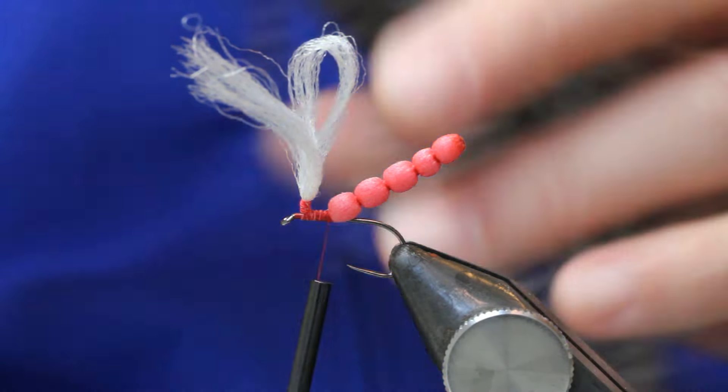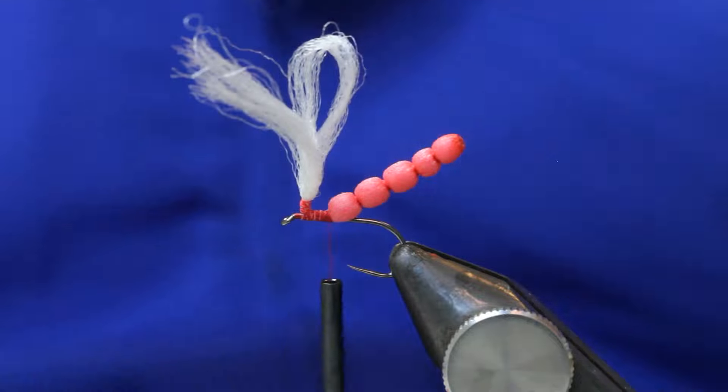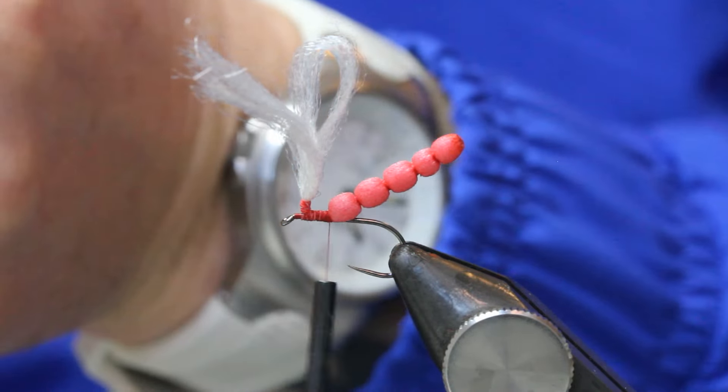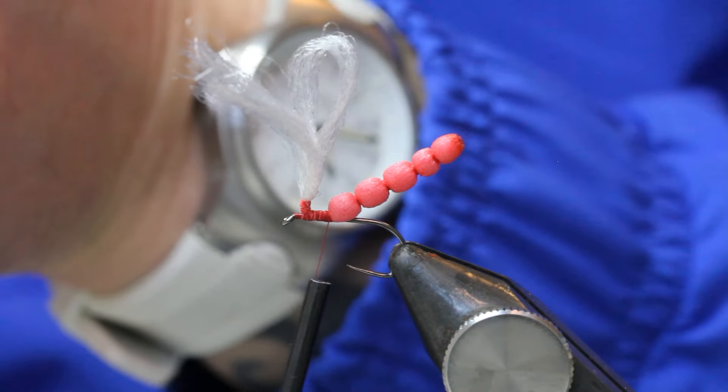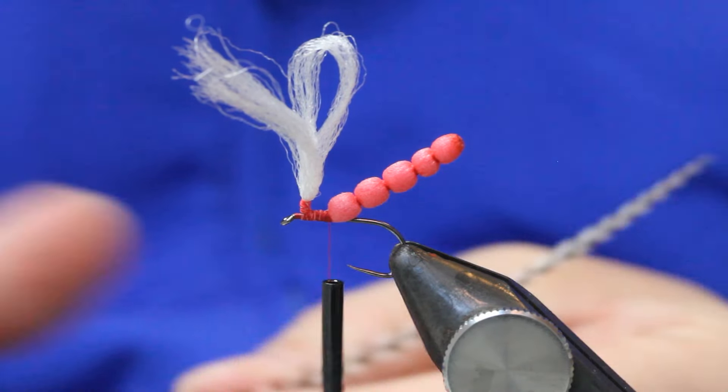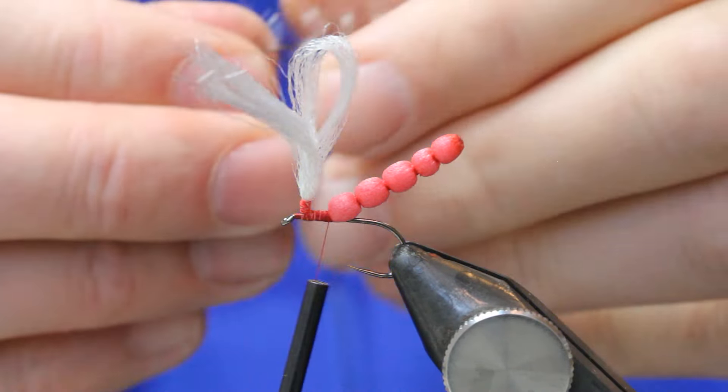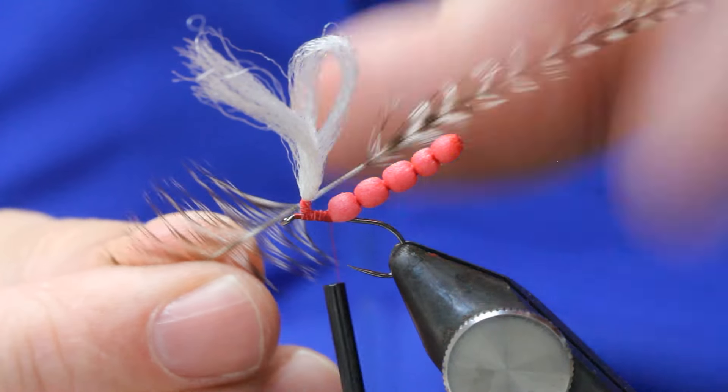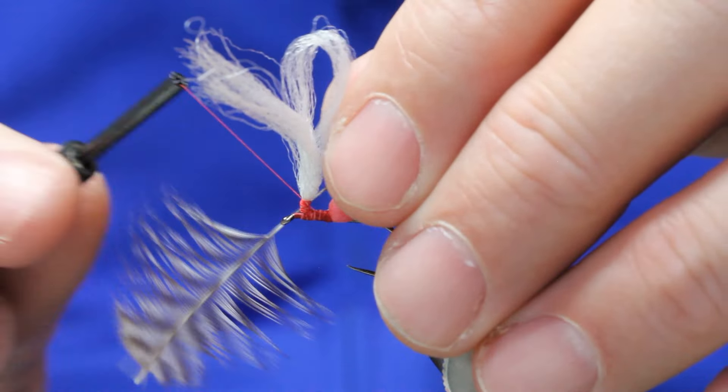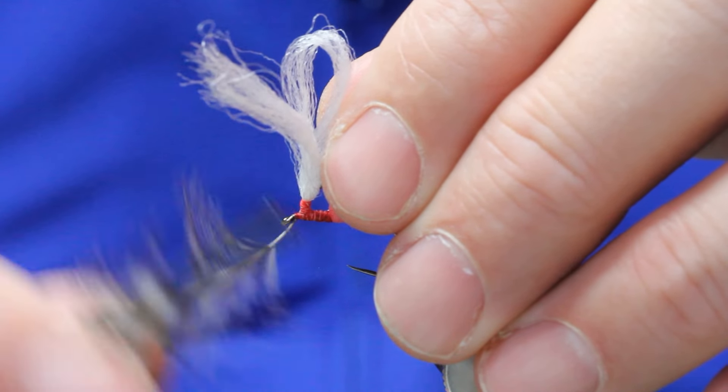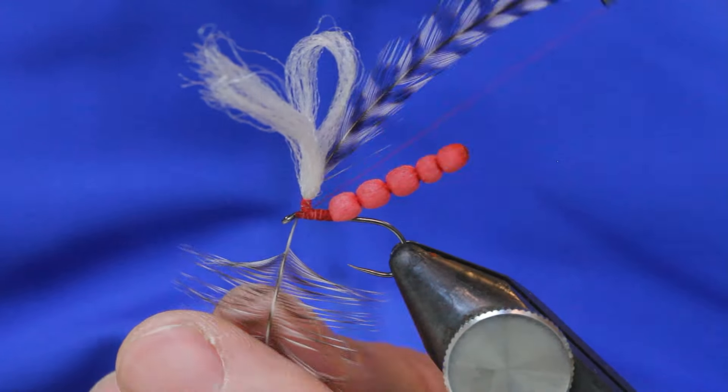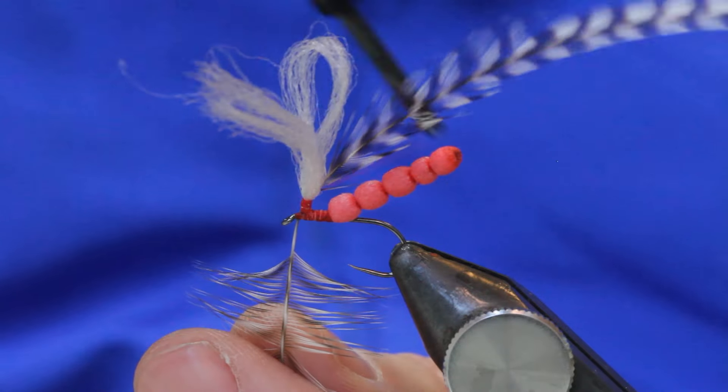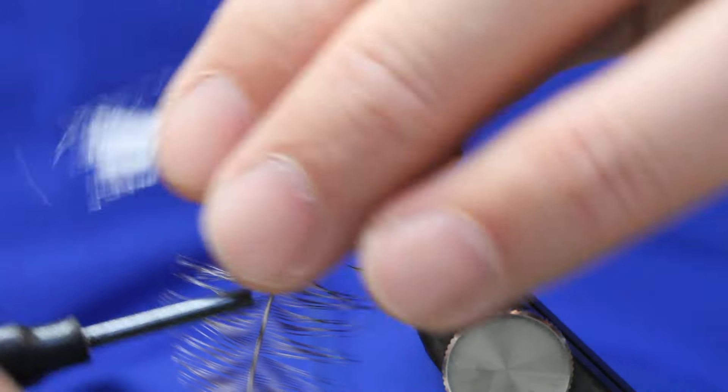So before I do any winding I've got a genetic grizzle. I prefer grizzle to natural cock cape. Watch that I get the spread right. Now all I'm going to do is pull some fibres away from the stem and then lock them in on the front of the eye and then come up and then just get the stem so it's up next to the antron like so.